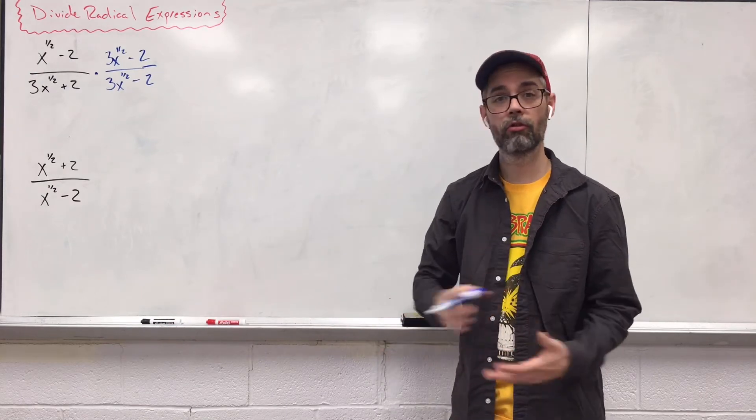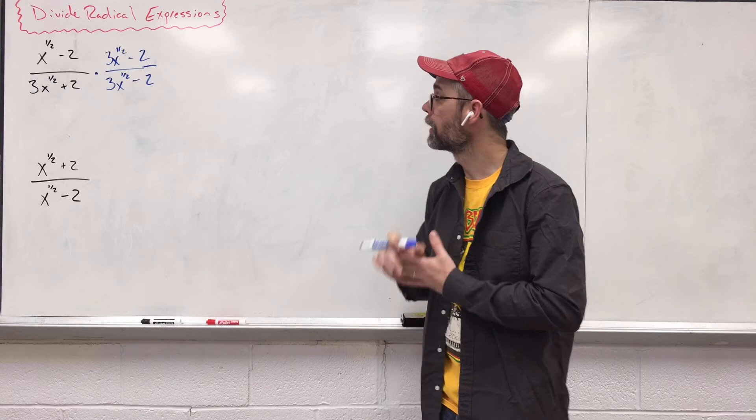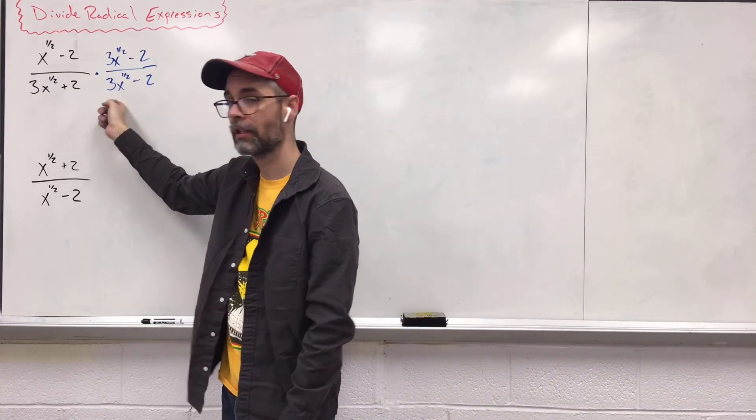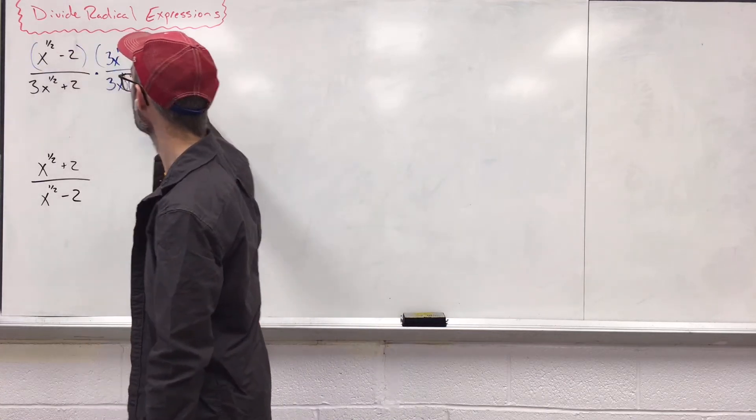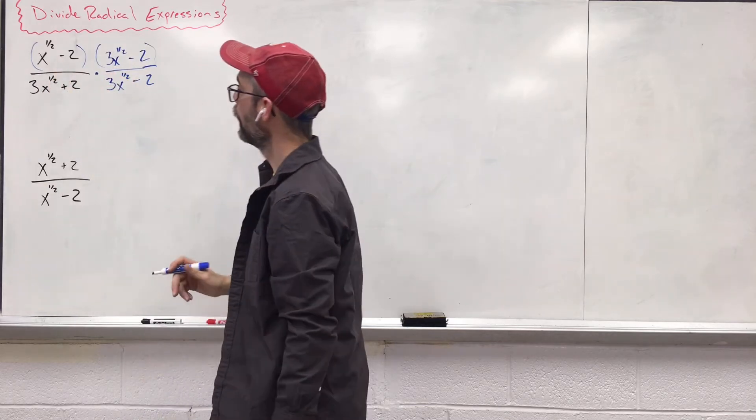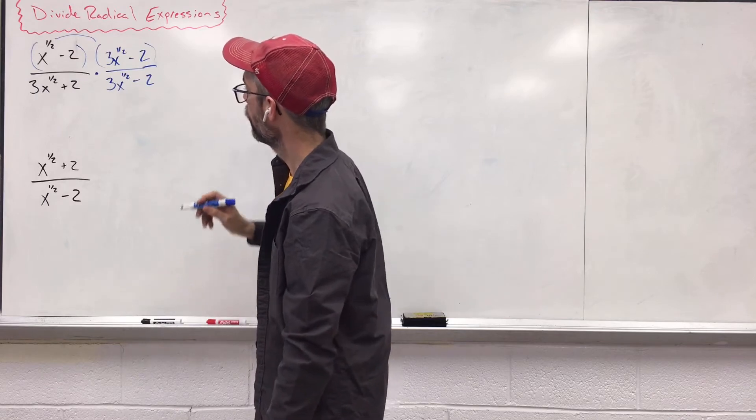Now, all we have to do is distribute. Distribute the top, distribute the bottom. It's going to be a long, ugly answer, but that's okay. Our main goal is to get rid of these fraction exponents down in the bottom. So, up top, let's distribute. Let's multiply these two things: x to the one-half and 3x to the one-half.